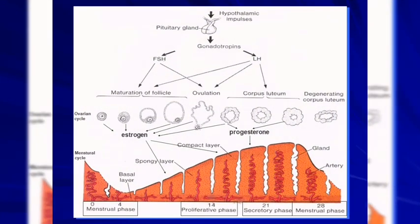Estrogen produced by the maturing ovarian follicle acts on the endometrium, stimulating the proliferative phase. This causes growth of the stratum functionalis — the compact layer and spongy layer — and the straight glands of the endometrium thicken. When the follicle matures and the oocyte is released at ovulation, the granulosa cells are now called granulosa lutein cells, and the theca interna becomes theca lutein cells. The granulosa lutein cells produce progesterone and theca lutein cells produce estrogen.